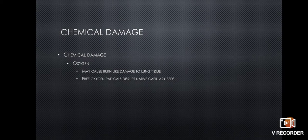Immature lungs have an inadequate number of mature cilia to function adequately. The inclusion of supplemental oxygen causes more damage to the tissue, resulting in a decreased number of available cilia needed for the exchange of gases and fluids. Disruption of capillary beds further decreases the efficiency of this exchange.